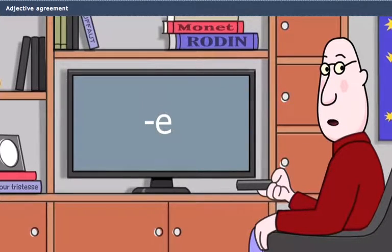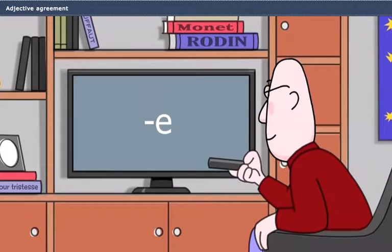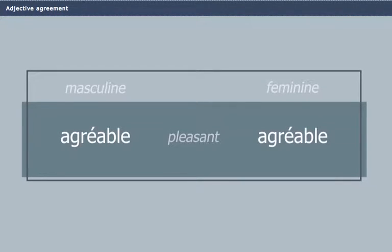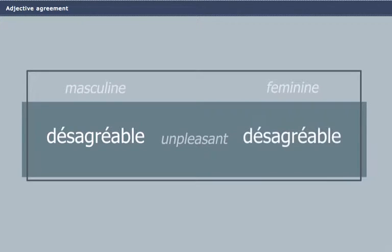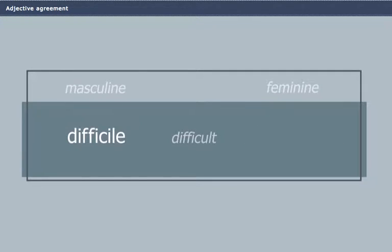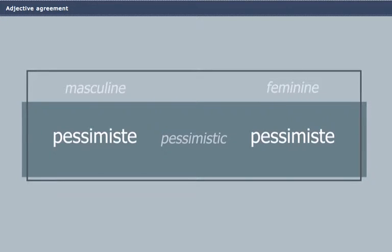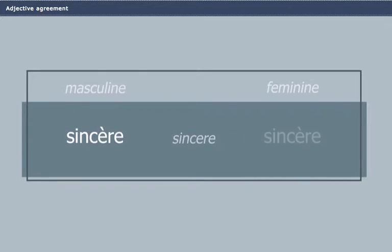Agréable, agréable. Désagréable, désagréable. Difficile, difficile. Égoïste, égoïste. Optimiste, optimiste. Pessimiste, pessimiste. Sincère, sincère. Sociable, sociable. Sympathique, sympathique. Timide, timide.